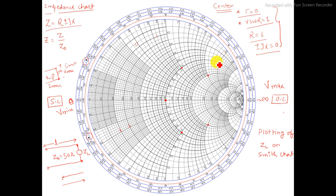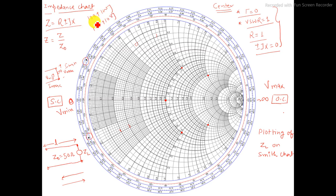Now we will discuss normalization. This Smith chart is a normalized Smith chart. Whenever we have a load value — whether it is 100 plus 100j or 100 minus 100j — we always have to normalize with respect to the characteristic impedance. Whatever kind of transmission line you take — planar, CPW, microstrip, or any other — where you would like to do matching, it has a certain characteristic impedance.